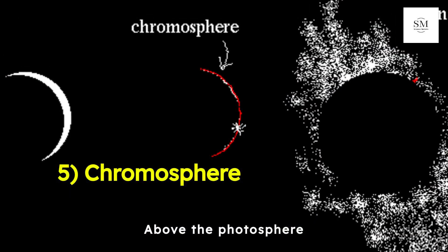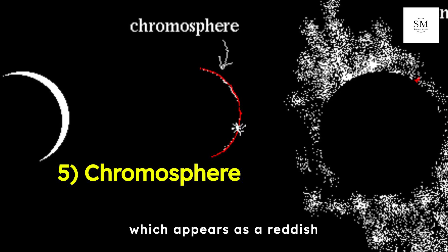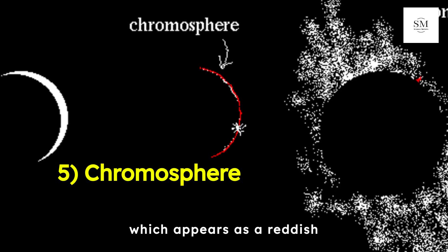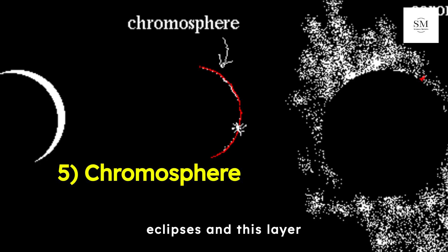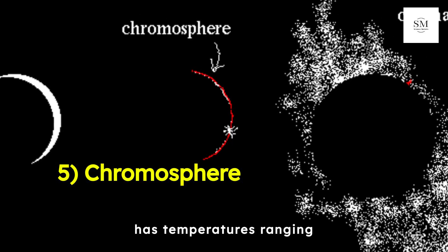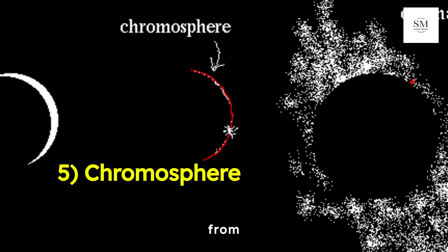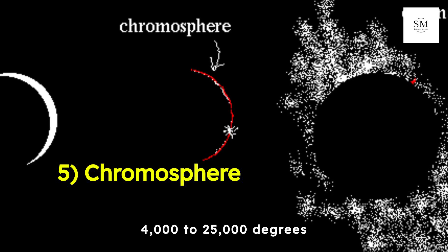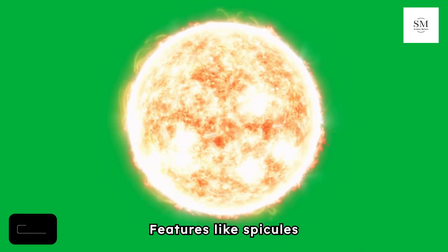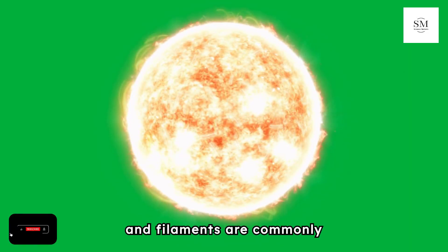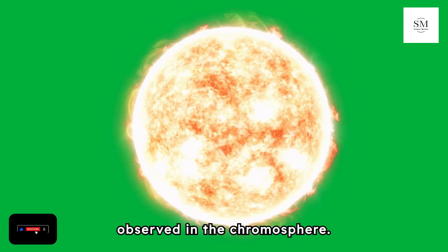Above the photosphere lies the chromosphere, which appears as a reddish glow during solar eclipses, and this layer has temperatures ranging from 4,000 to 25,000 degrees Celsius. Features like spicules and filaments are commonly observed in the chromosphere.